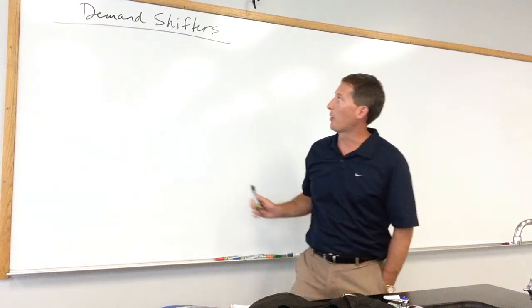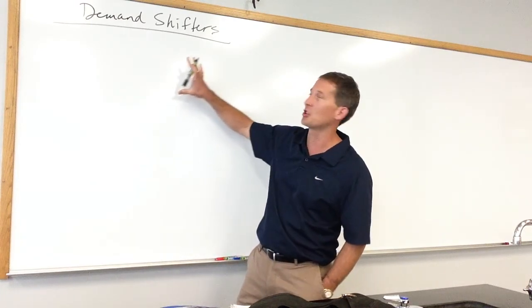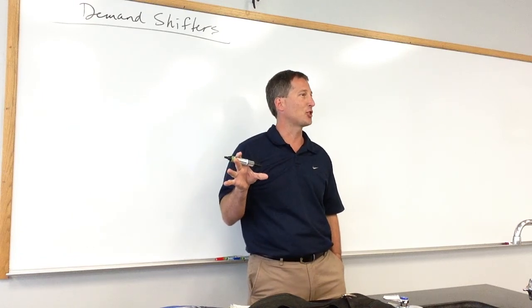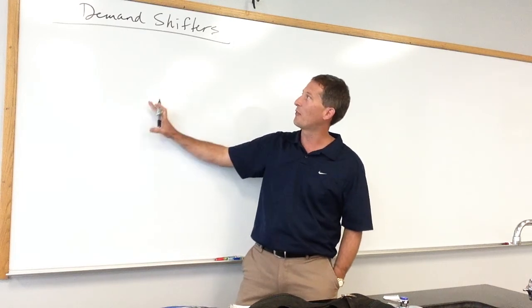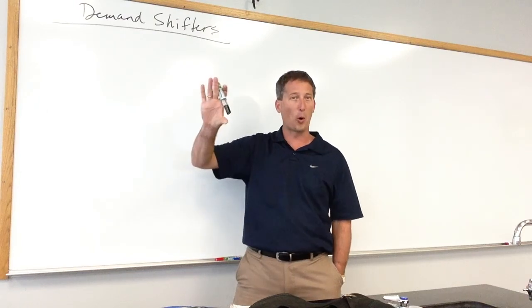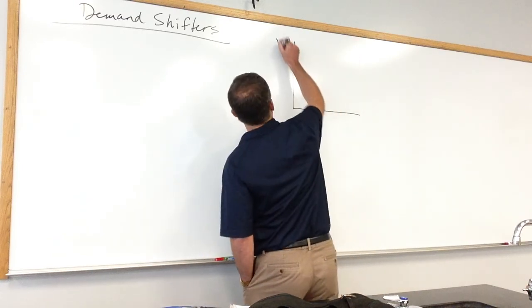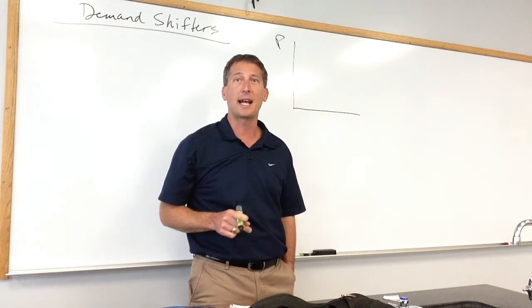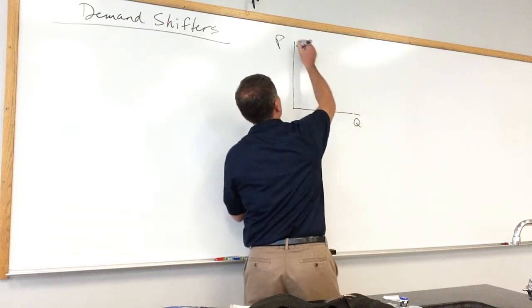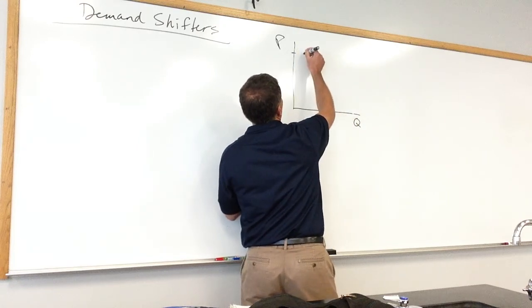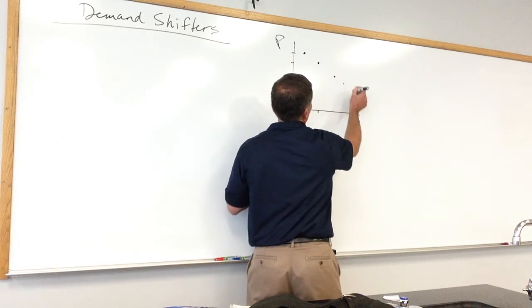The most notable thing that's not on the shifters list is the price of the good — it's not something that shifts demand. Students tend to get shift happy, which is not good. Don't get shift happy. The price is such an important variable in the decision of how much stuff you buy that we choose to measure it right here on the vertical axis. It then determines the look of the demand curve, which is the downward sloping line. If prices are high, we don't buy much. If prices get lower, we buy more.